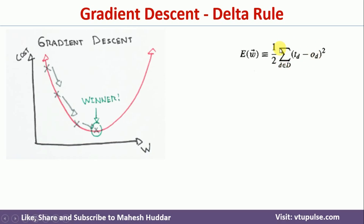Once you calculate this error term, you may get the error somewhere on this curve. Let's assume we got the error at a certain point — for that error, the weights are pointing at a corresponding position. Similarly, if you initialize some other weights, the error will point at a different position on the curve.